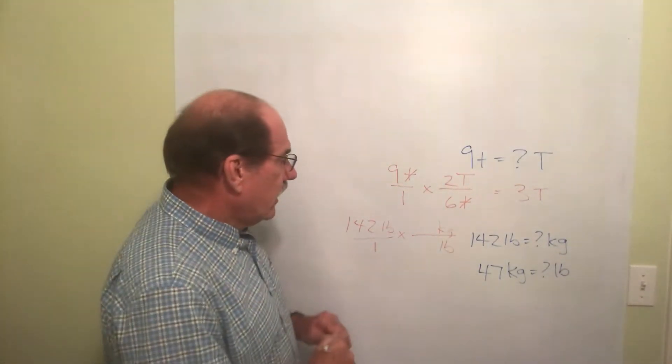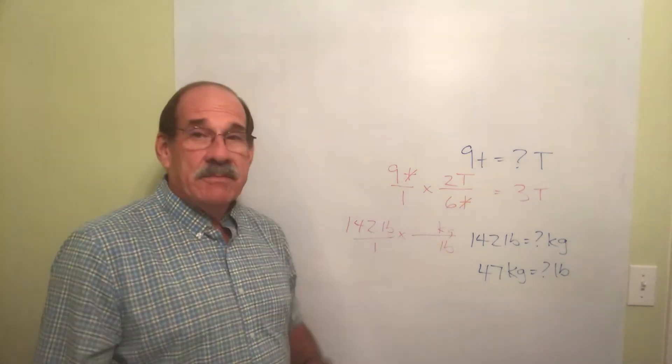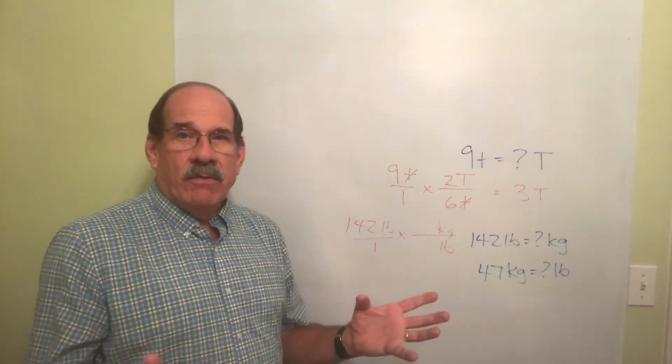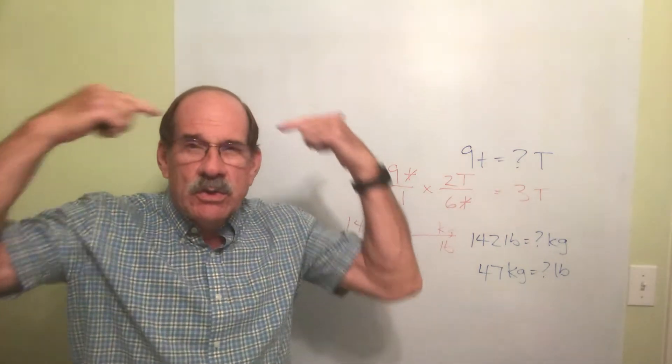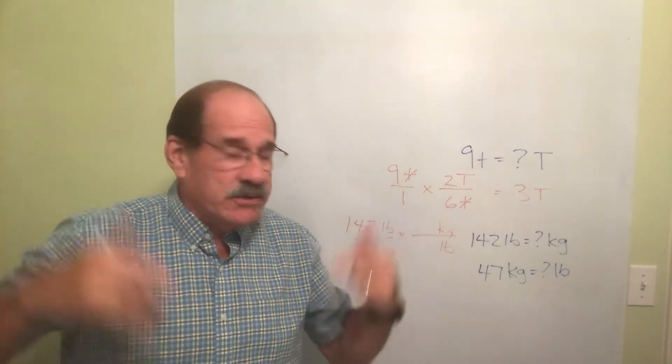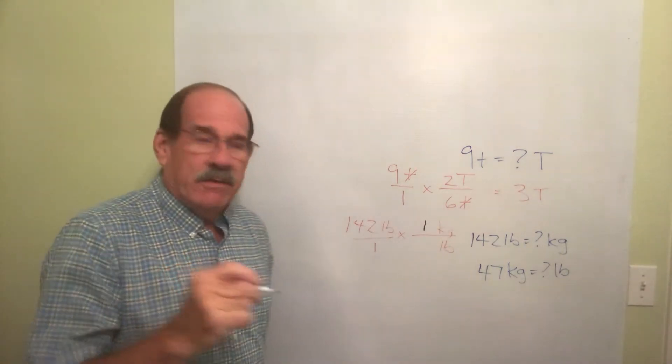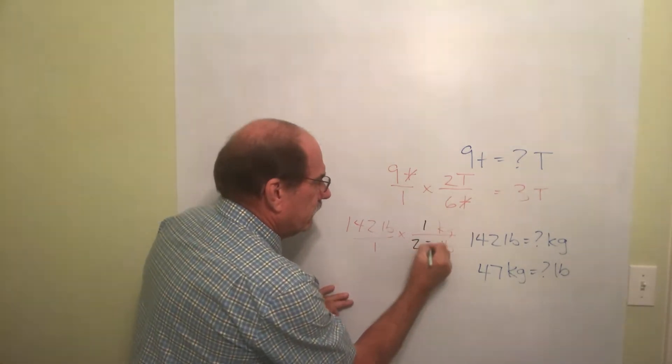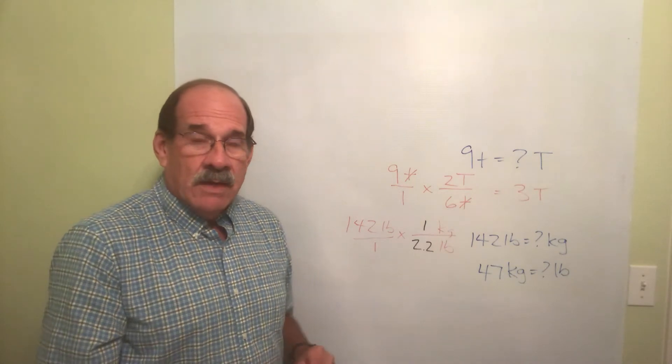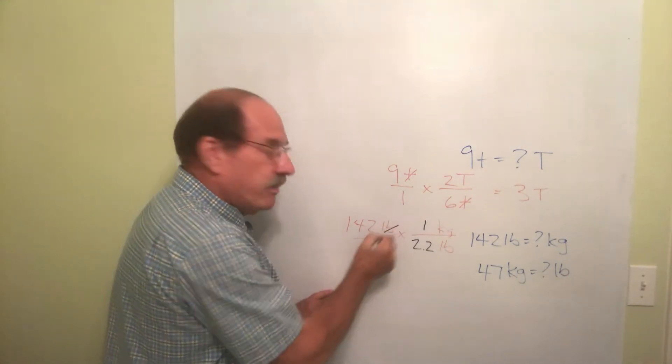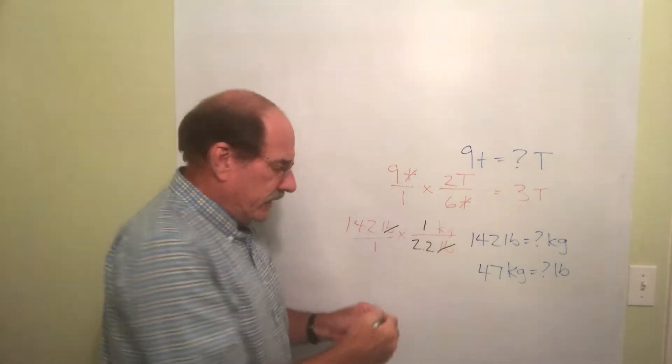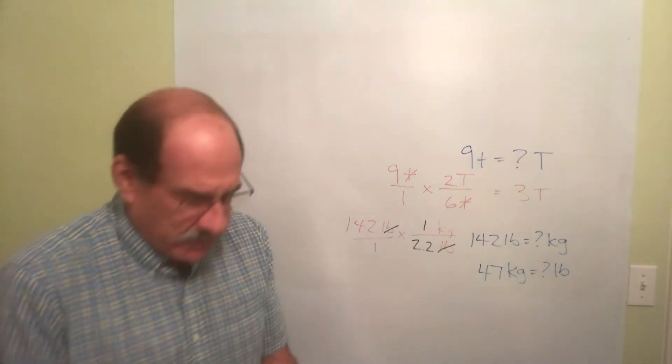Now how do pounds and kilograms compare? We said before, you got this somewhere etched into your memory, right? You better have this: one kilogram is 2.2 pounds.